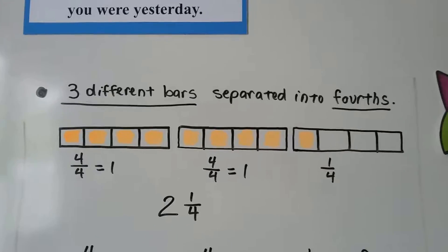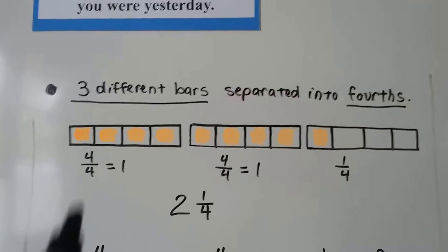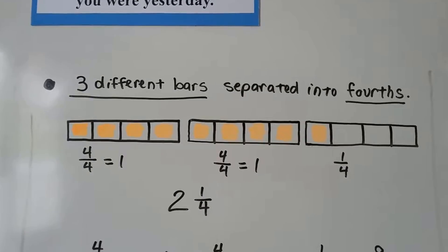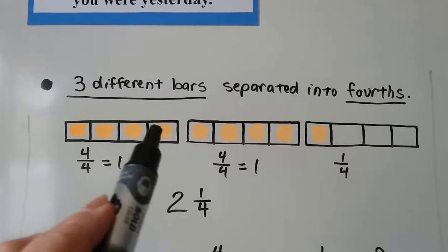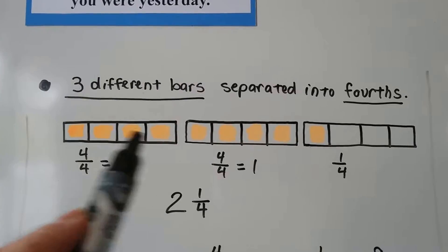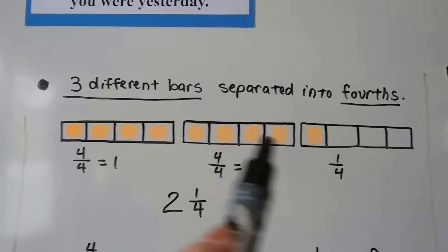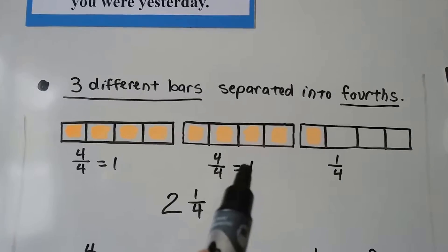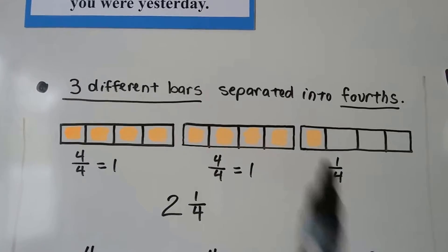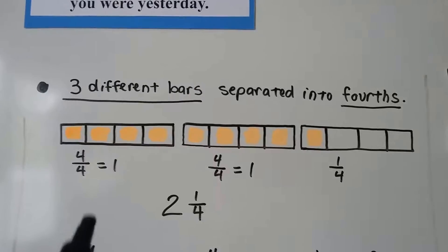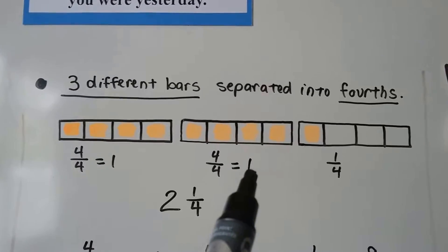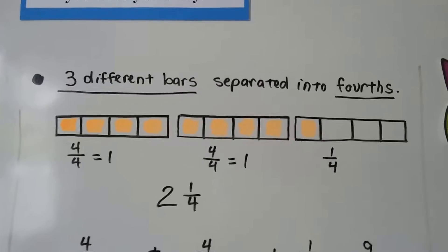So here we have three different bars. We have this one, this one, and this one, and each bar is separated into fourths. 4 fourths of this one is shaded, so that means one whole bar is shaded. 4 fourths of this one is shaded, so the whole bar is shaded, and only one out of the four equal parts is shaded for that one. So we have a 1 and a 1, that's 2, and 1 fourth are shaded.